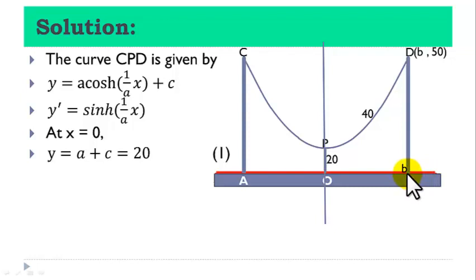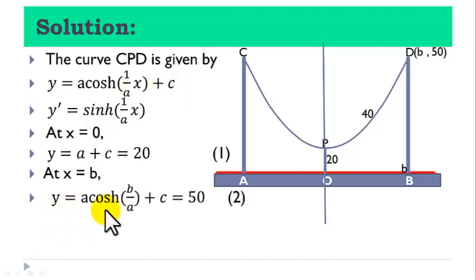Let us also find the value of y at the point B. At the point B, we know that y is equal to 50. But when you put x equal to b here, that will give us y equal to a cosh b over a plus c, and that is equal to 50. Let us number this as equation 2.